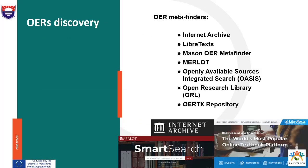The OER discovery process can be more efficient and faster if a MetaFinder engine is used. MetaFinder is an online tool that performs a simultaneous search across collections of OER. Some of the most popular OER MetaFinders are: Internet Archive — a library collection of OER that occupies 99+ petabytes of server space and provides free access to researchers, historians, scholars, people with print disabilities and the general public. LibreTexts is a multi-purpose platform that allows for the creation, remixing and storing of all openly licensed and public domain content.